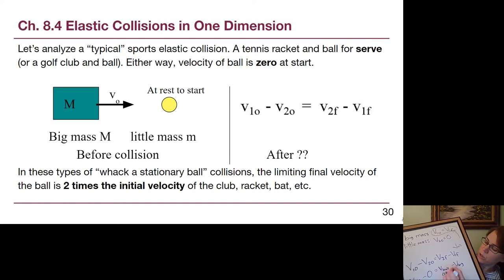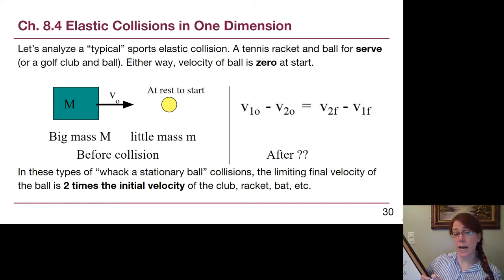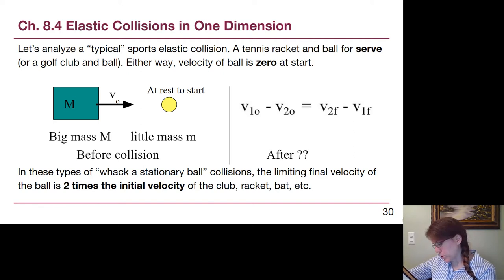If we want to know the velocity of the ball, we just add V big to both sides, and what we end up with is two times the velocity of the big mass is the velocity of the ball, the little mass, with our assumptions.